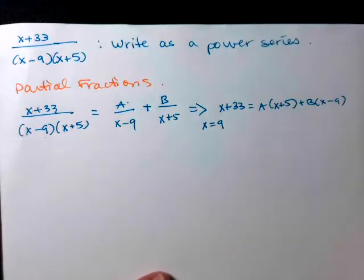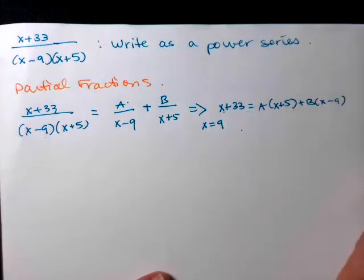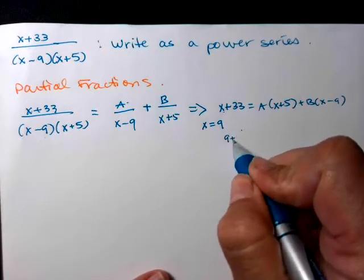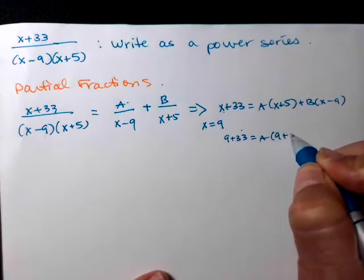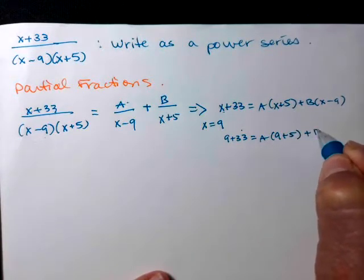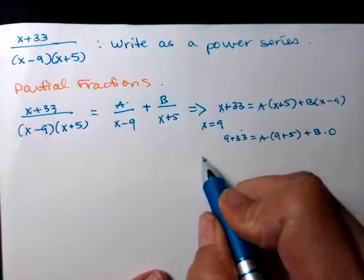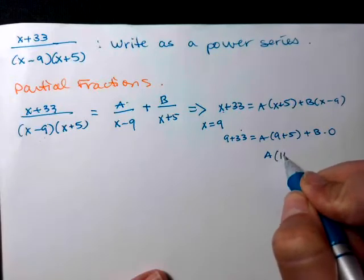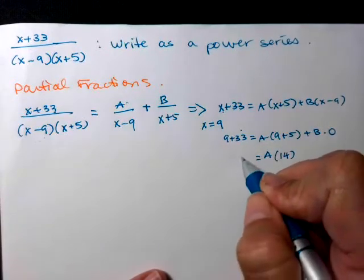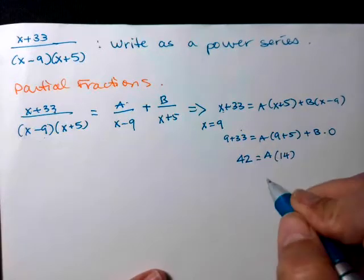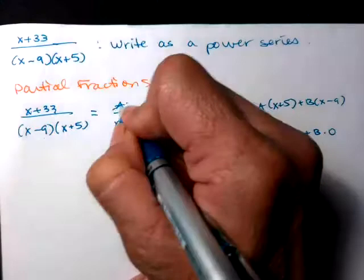So then I'm going to evaluate at different values of x to figure out what my A and B are. So I'll start with 9. That'll get rid of my B and tell me that. Be careful. You have to plug it in on the left side too. So now we have 9 plus 33 equals A times 9 plus 5 plus B times 0. So that goes away. So I'm going to get, oh my gosh, arithmetic. I'll do this side first. 14A equals 42. Oh, that's nice. So divide by 14. So A is 3. So my A value is 3.